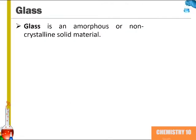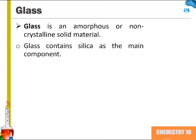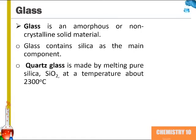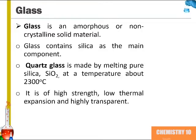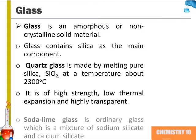We'll begin by talking about glass. Glass is an amorphous or non-crystalline solid material. It contains silica as the main component, and quartz glass is made by melting pure silica at a temperature of about 2300 degrees Celsius. It is of high strength, low thermal expansion, and highly transparent.